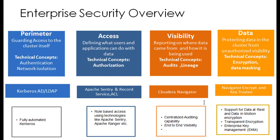For visibility, we have audit and lineage, and for that we have Cloudera Navigator in place. This feature is restricted to either the Enterprise Edition or Enterprise Trial Edition — the Express Edition does not provide it. Cloudera Navigator provides centralized auditing capability and end-to-end visibility. There is also a lineage option, which gives a graphical view showing how data moves from one analytical engine to another and how transformations happen.